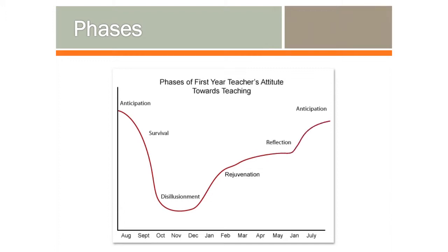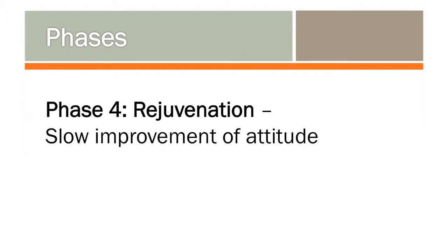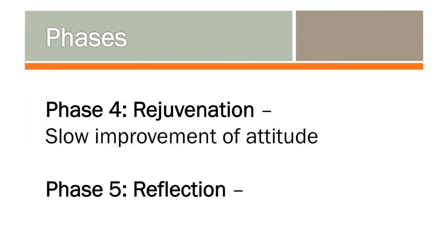Right now, most of our teachers are in the rejuvenation and reflection stage. During phase four, you see a slow improvement of attitude — their toolbox is starting to grow. They have a change in attitude: they can do this, they are a good teacher, they're going to survive the year. Then, when they move into phase five, reflection, they can see that the end is in sight and that they've actually completed their first year of teaching.